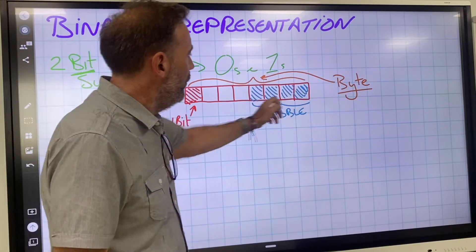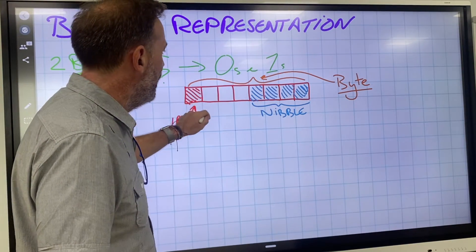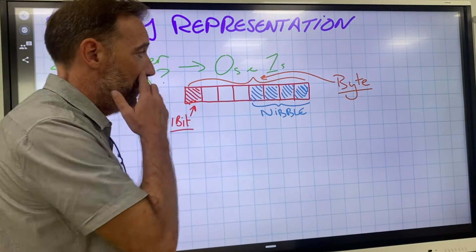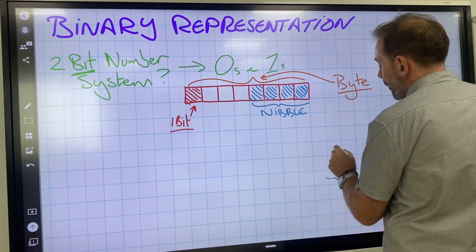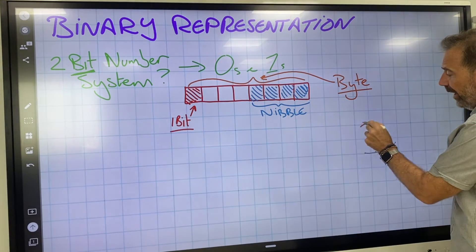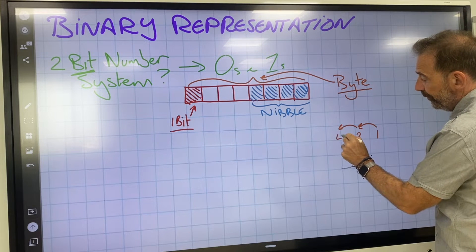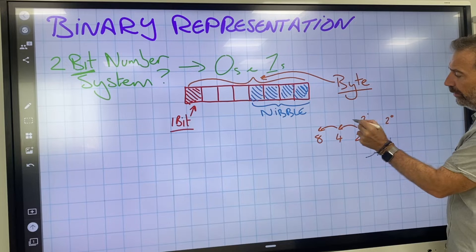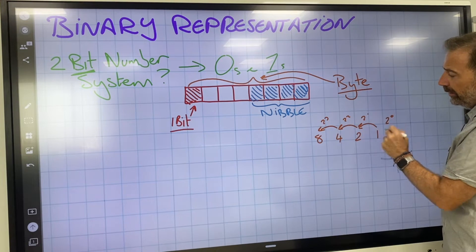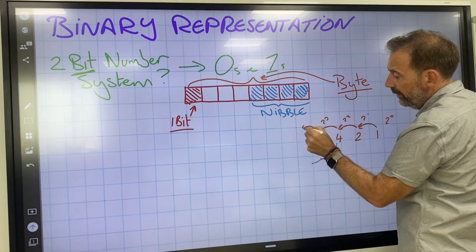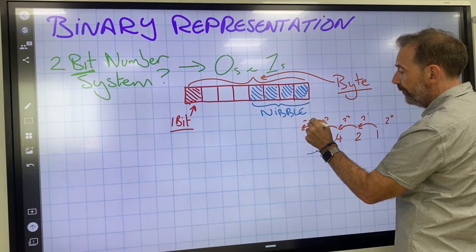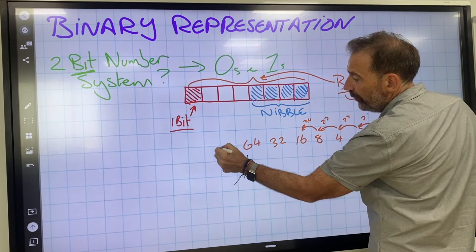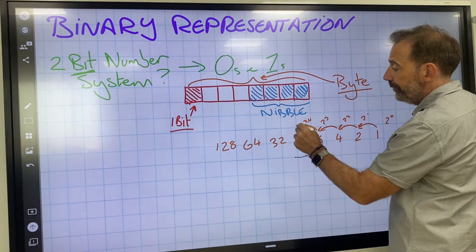In terms of the register, most of the answers you're going to work with in binary representation will be in the form of an 8-bit register. If we do an 8-bit register and go: 1, times by 2, times by 2, times by 2 — or more precisely: 2 to the 0, 2 to the 1, 2 to the 2, 2 to the 3 — we've created a nibble. Then times by 2 again: 2 to the 4 is 16, then 32, 64, 128. That would be our number system.